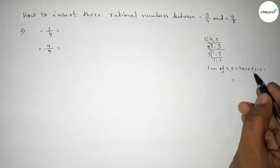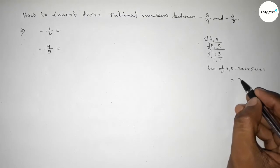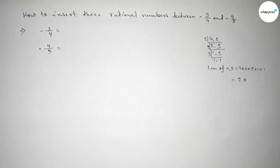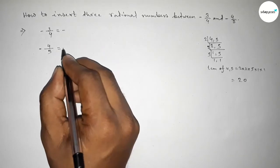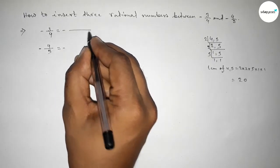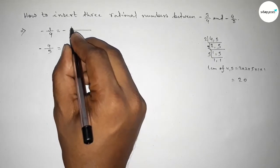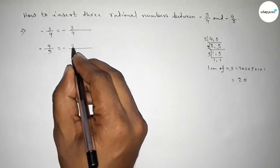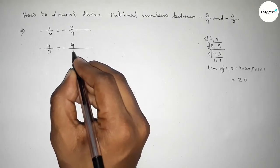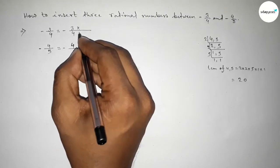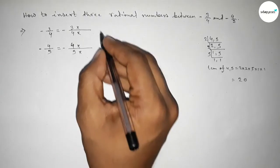Now writing here the numbers by this way: -3/4 and here -4/5, and multiplying up and down by this way. So here we have to make the denominator of both numbers equal to 20.